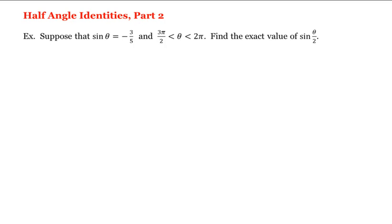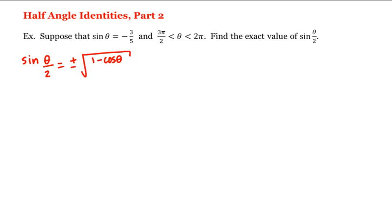Let's recall the half-angle identity for sine. We have that sine of theta over two is equal to plus or minus the square root of one minus cosine theta, all divided by two.